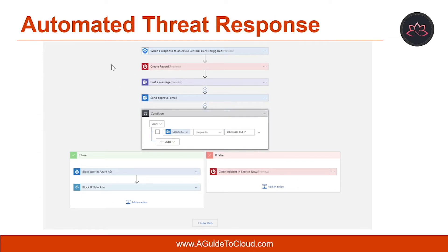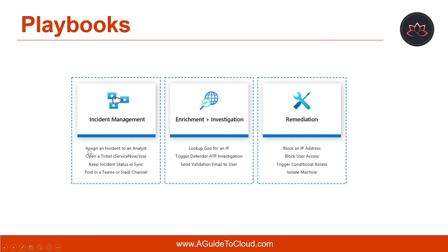The volume of alerts generated is so huge that available security admins are overwhelmed. This results in situations where many alerts can't be investigated, leaving the organization vulnerable to attacks that go unnoticed. Many of these alerts conform to recurring patterns that can be addressed by specific and defined remediation actions. Azure Sentinel enables you to define your remediation in playbooks. A security playbook is a collection of procedures that can be run from Azure Sentinel in response to an alert, and can be run manually or set to run automatically when specific alerts are triggered.